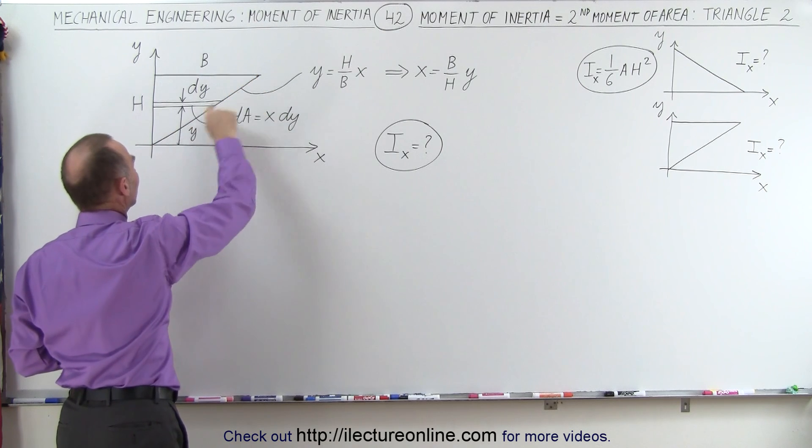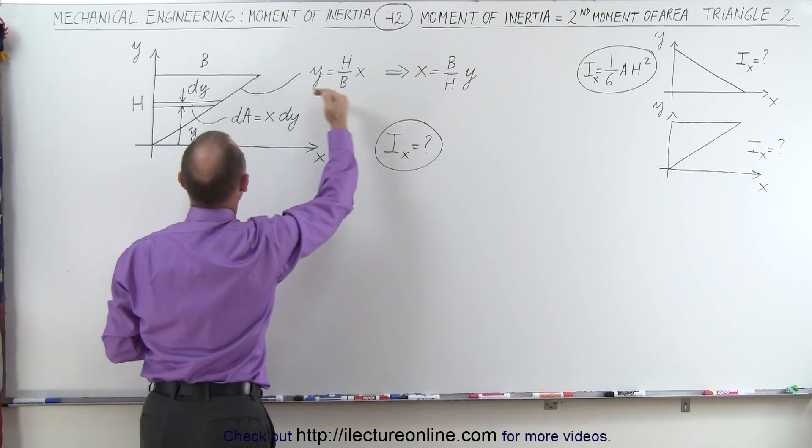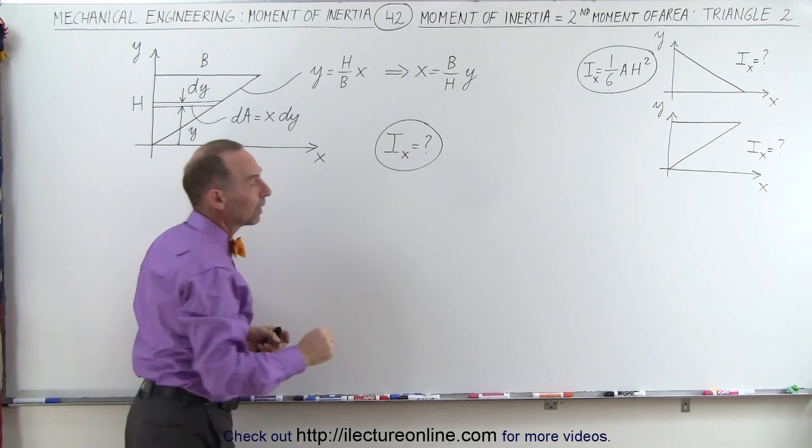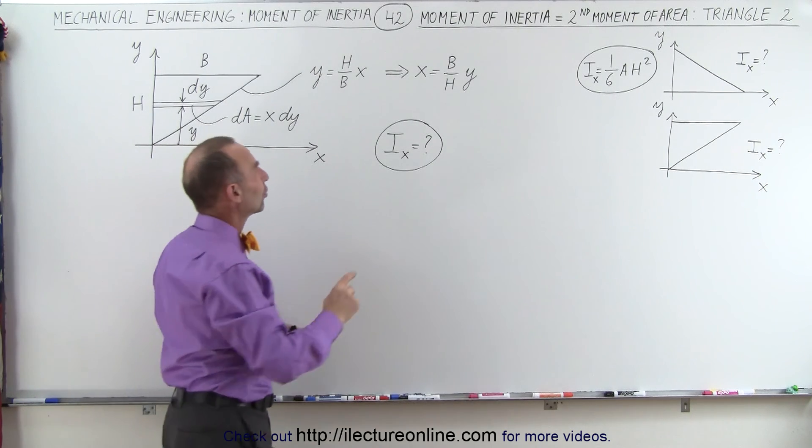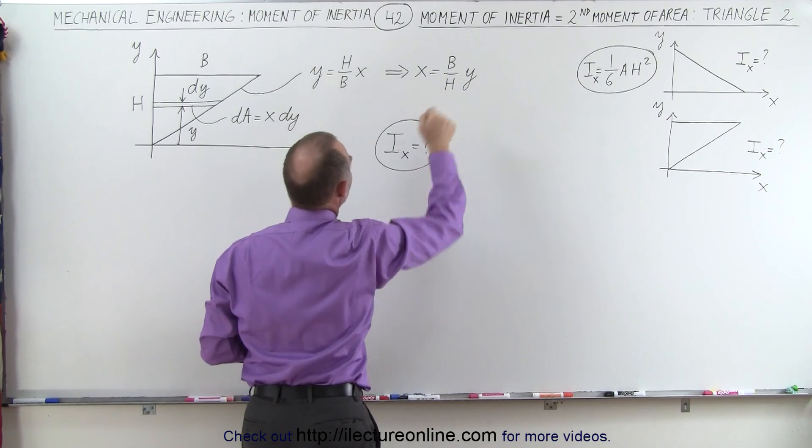The equation of this line, since it goes to the origin, is going to be y equals mx plus 0. The y-intercept is at 0, and the slope is the rise over the run, h over b. We're going to need this equation solved for x in terms of y, so therefore x equals b over h times y.